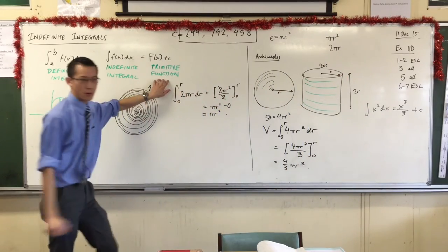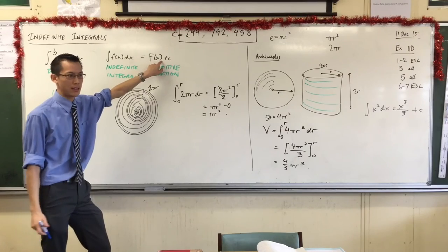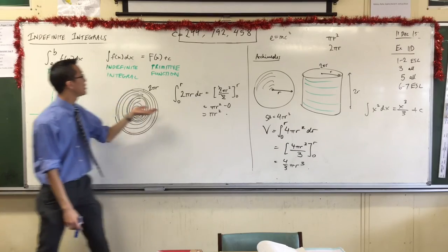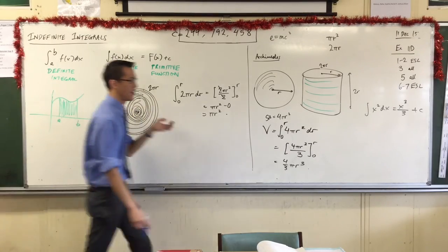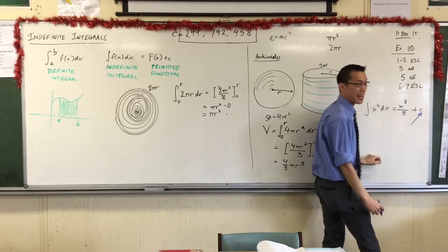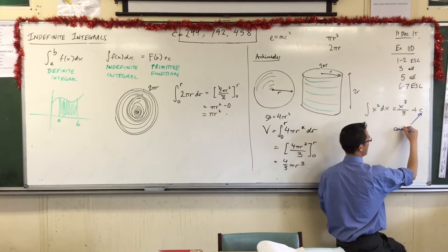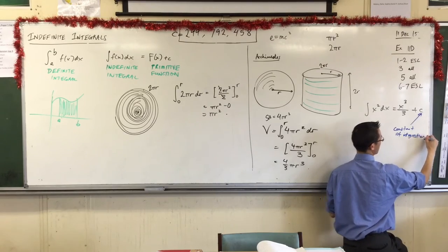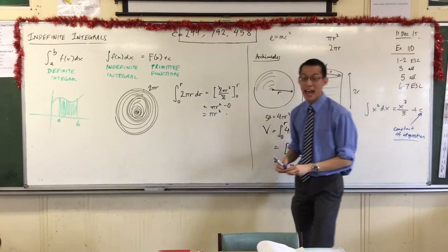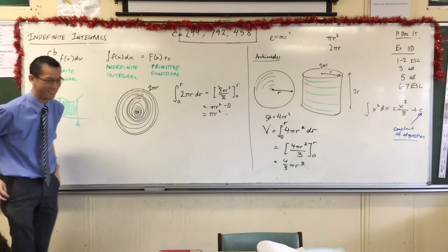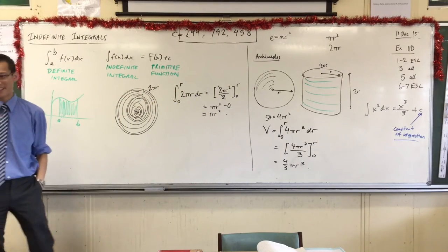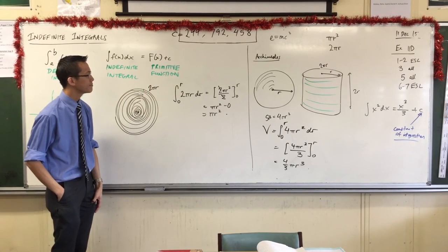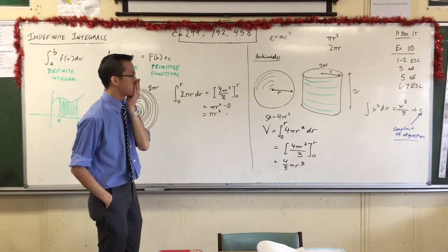And now is the perfect time to actually tell you, when we learned about the primitive function, we said it has to have plus c because there's a whole family of them. But now that you know it's also attached to this process of integration, this c on the end, its proper name is the constant of integration. So now it gets a name, because now you know how it comes about. It wouldn't have made much sense to say it's because of integration when you didn't know what an integral was, but now you do.